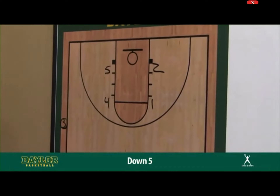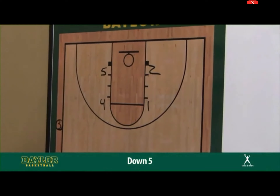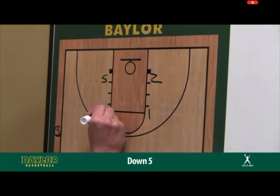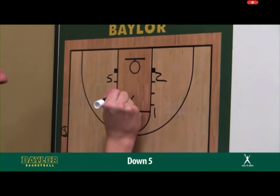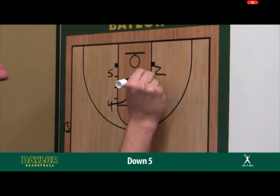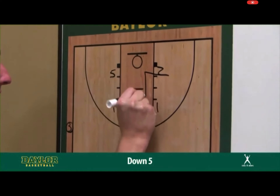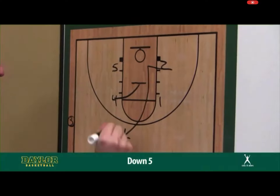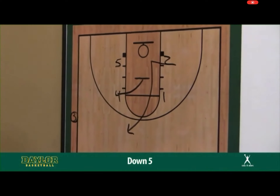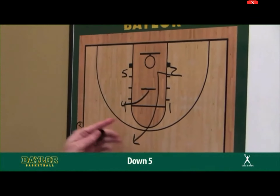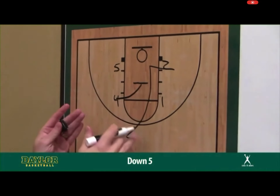We have our three-man taking it out. The first action we want to set is the four coming down about mid-lane, looking for a pin down for the two. At this point, we want the two to get up to the top of the key area, middle tunnel area.